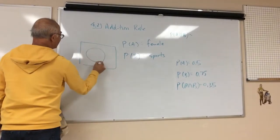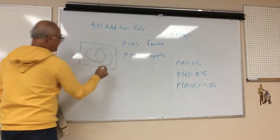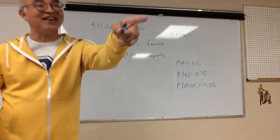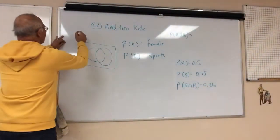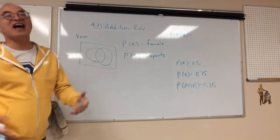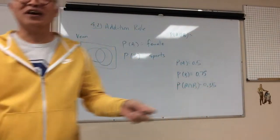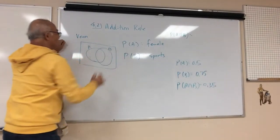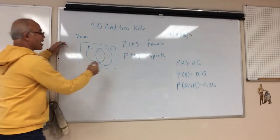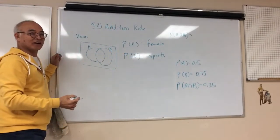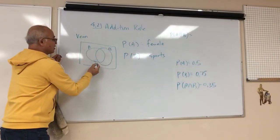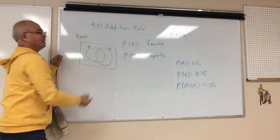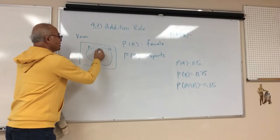Maybe this will ring a bell. Does this ring a bell? It's a Venn diagram. Because a guy named Venn came up with this stuff. It's a Venn diagram. So we'll call this A, we'll call this B. So what is A? A is female, right? So this is 0.5. And this is 0.75. The one in the middle is 0.35.